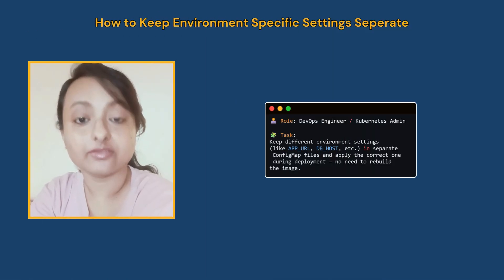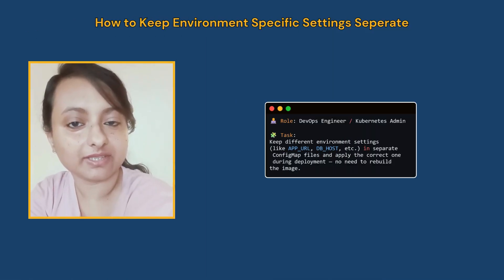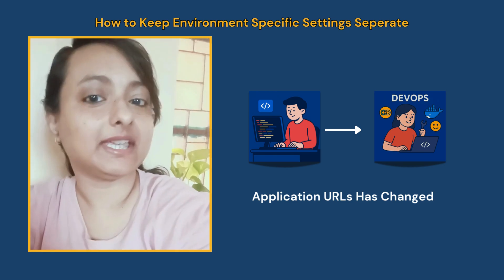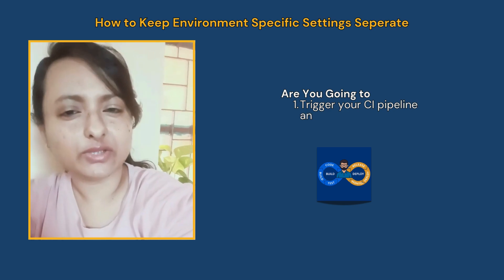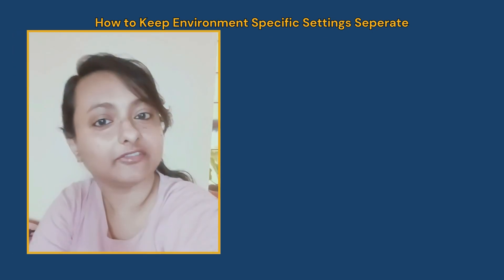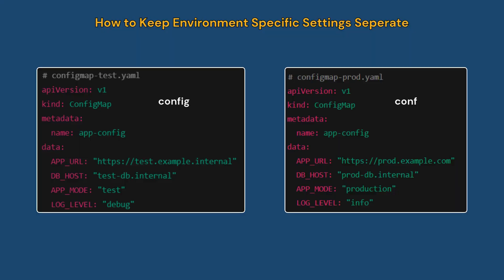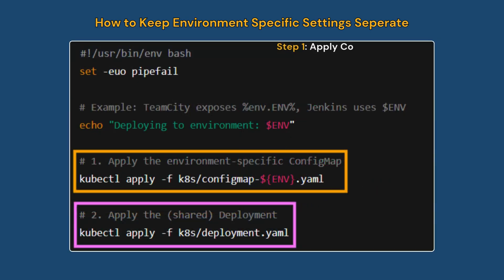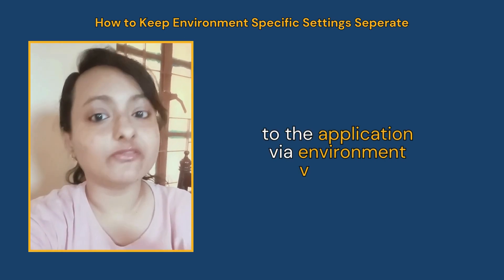In your DevOps interview you are asked: what feature of Kubernetes would you use to keep environment-specific settings separate? Real-world scenario: your production deployment is scheduled for tomorrow and the application team informs you the application URL has changed. Are you going to rebuild the image and trigger CI again? No — that's slow and inefficient. The feature we use is ConfigMap. We keep two separate ConfigMap YAML files: one for the test environment ('config-map-test.yaml') and one for production ('config-map-prod.yaml'). Each file contains environment-specific settings like app URL, DB host, app mode, and log level. When deploying to production, first apply the ConfigMap prod YAML, then apply the deployment YAML — ensuring the correct production settings are passed via environment variables.